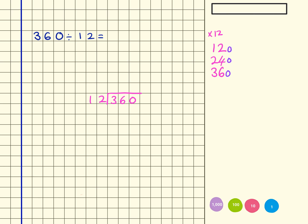So then if I was to have done the 120 times table, that would have given me those multiples: 120, 240, 360. So that now tells me that there are 30 lots of 12 within 360.